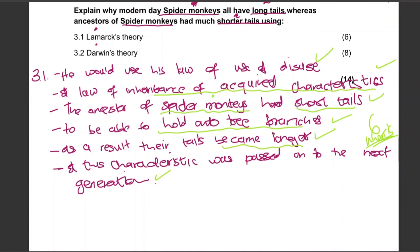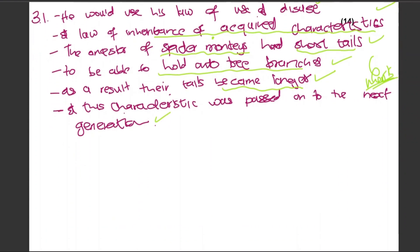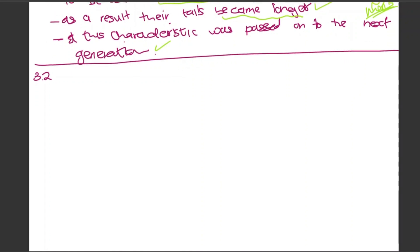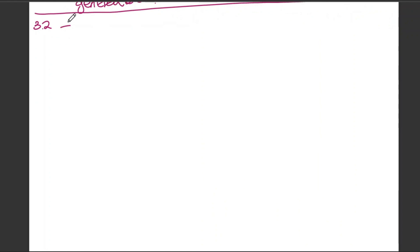Now let's answer using Darwin's theory — 3.2, for eight marks. Again, it's an application question. You can't just say 'favorable characteristics' or 'unfavorable' — you have to state what the characteristic in question actually is. So: evolution occurs by natural selection.